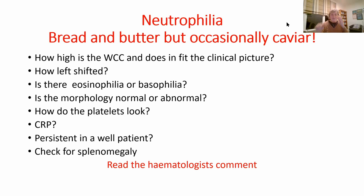Now we've got neutrophilia — I've called it 'breathing better' because most of the time we see it and don't worry too much. Occasionally though, you'll get caviar. The critical things are: how high is the white count, and does it match the clinical picture of reactive infection? In an infected patient you can have a high count that's left-shifted, and we'll often report toxic changes: toxic granules, toxic vacuolation, and Döhle bodies. If you get all of that with the neutrophilia, you've got infection. Even if you can't see a source, the CRP will be high and you'll treat it.